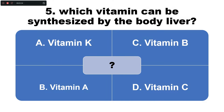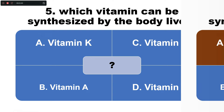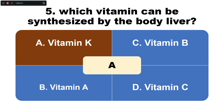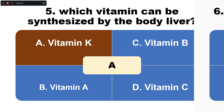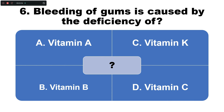Question number five: Which vitamin can be synthesized by the body's liver? Option A: vitamin K, B: vitamin A, C: vitamin B, D: vitamin C. The correct answer is option A — vitamin K is the vitamin produced by the liver.